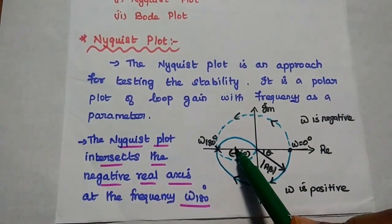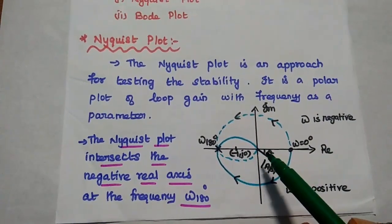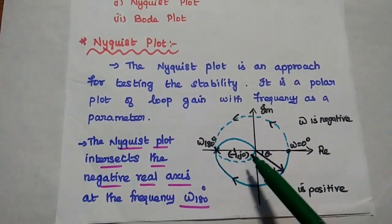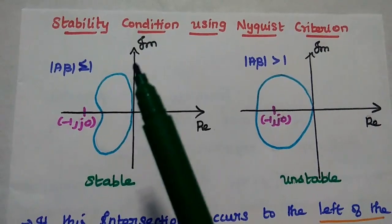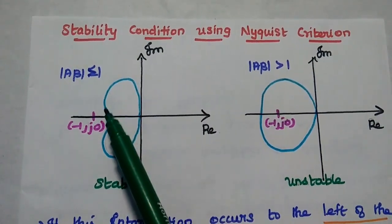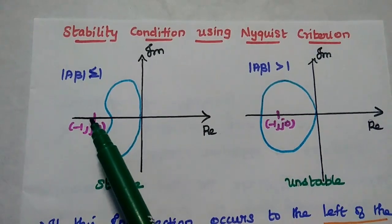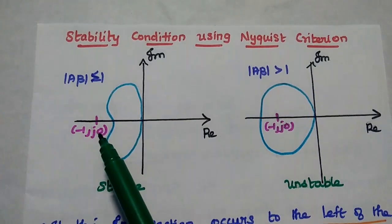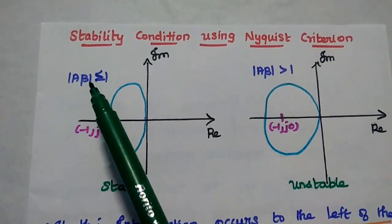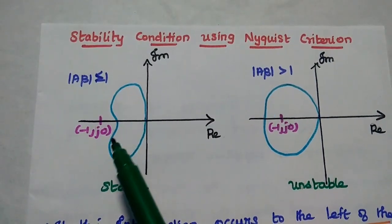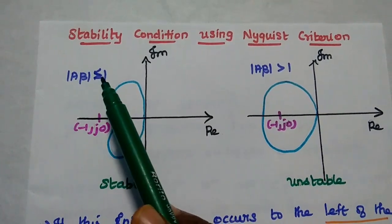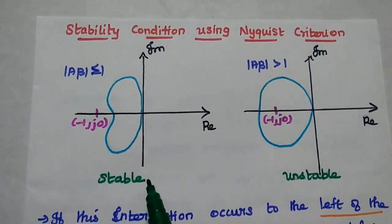The critical point on the Nyquist plot is minus 1 comma j0, which decides whether the feedback amplifier is stable or unstable. Using the Nyquist criterion, if the Nyquist plot intersects the real axis to the right of the point minus 1 comma j0, then the magnitude of loop gain |A·beta| is less than or equal to 1, and hence the system is stable.